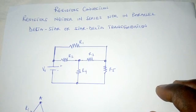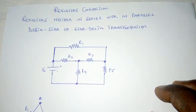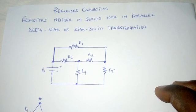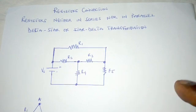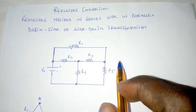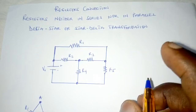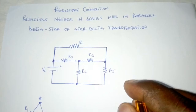It was therefore important to introduce another method of combining these resistors, and this is what we refer to as delta-star transformation or star-delta transformation. This transformation considers a combination of only three resistors at a time.